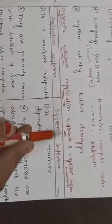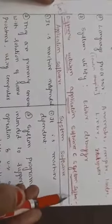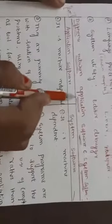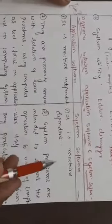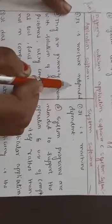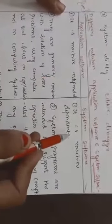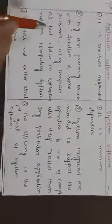One question is difference between application software and system software. Application software is machine independent. It is not dependent on any machine architecture. But system software is machine dependent software.